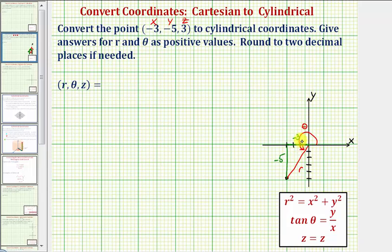Notice how to find r, we'd use the Pythagorean Theorem given here as r squared equals x squared plus y squared. So we'd have r squared is equal to negative three squared plus negative five squared. So we have r squared is equal to nine plus twenty-five. So r squared is equal to thirty-four.